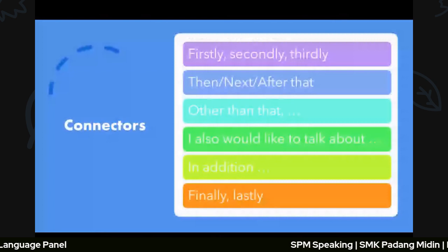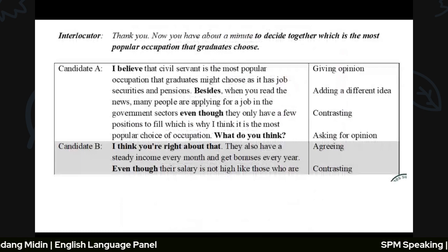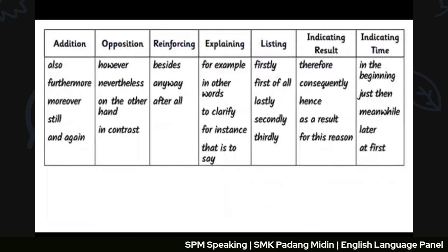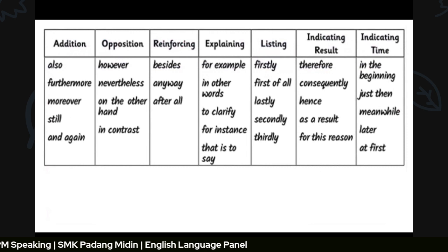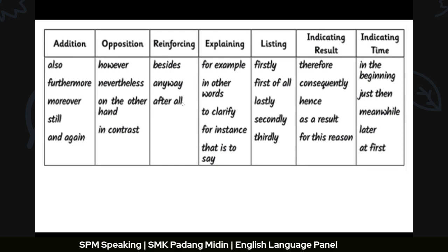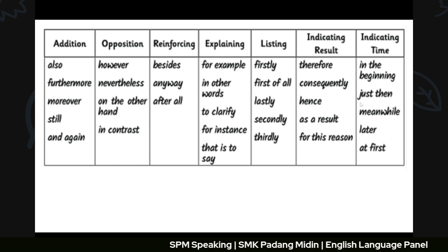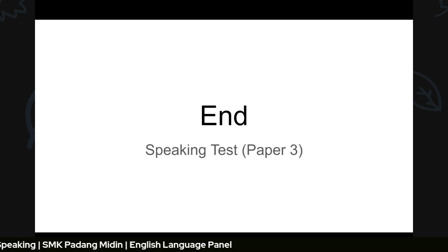There are many discourse markers and connectors available. You do not need to memorize all of them — just pick one or two for each function. For addition, use 'furthermore.' For contrast or opposition, use 'in contrast.' To emphasize a point, use 'after all.' To give an example or clarify, use 'for instance,' 'to clarify,' or 'in other words.' Remember one or two for each function, and that is enough.